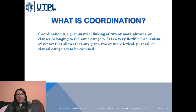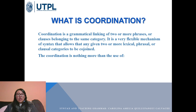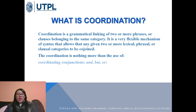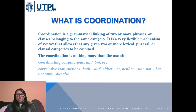What is coordination? Coordination is a grammatical linking of two or more phrases or clauses that belong to the same category. It is a flexible mechanism of syntax that allows any two or more lexical, phrasal, or clausal categories to be conjoined. Coordination uses coordinating conjunctions such as 'and,' 'but,' 'or'; correlative conjunctions like 'both...and,' 'either...or,' 'neither...nor,' 'not only...but also'; and conjunctive adverbs such as 'however,' 'nevertheless,' 'therefore,' 'moreover,' and 'even though.'